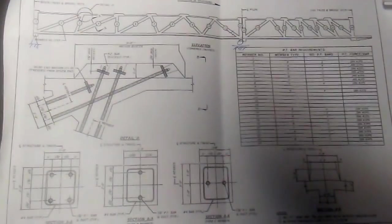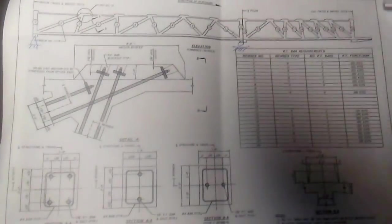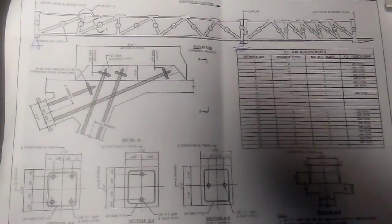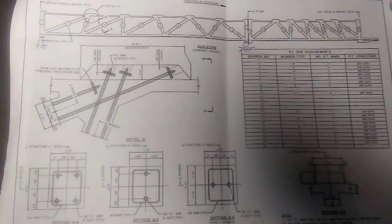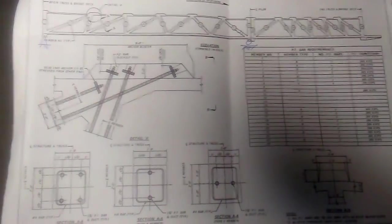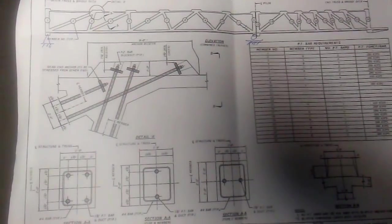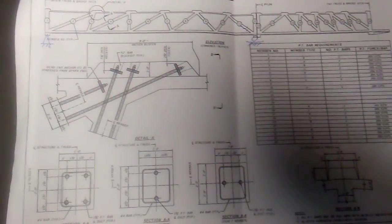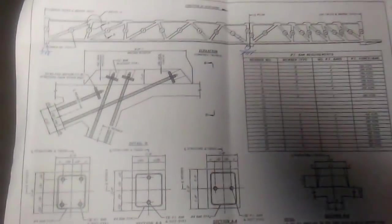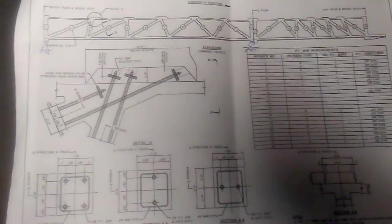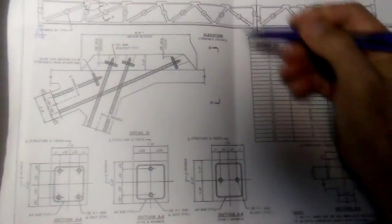My assumption is that this member was cracked. In order for that member to have cracked, it would mean that that member had most likely gone into tension. So how did that member go into tension?